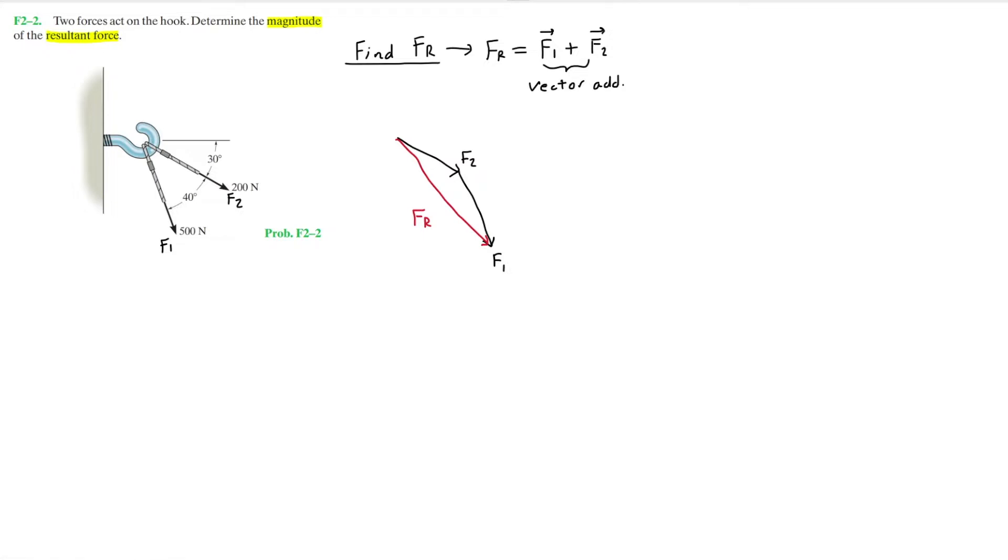And right here is going to be my horizontal reference, or the x-axis. And F2 is measured 30 degrees from that axis. And then F1 is at an angle of 40 degrees, just like that.